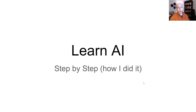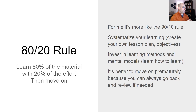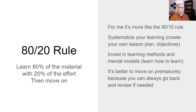David Shapiro here with another video. Today's video was community selected: learn AI step-by-step — this is how I did it. The first thing you need to know is follow the 80/20 rule. The 80/20 rule is you learn 80% of the material with 20% of the time or effort. For me it's more like the 90/10, but not everyone's brain works like mine.